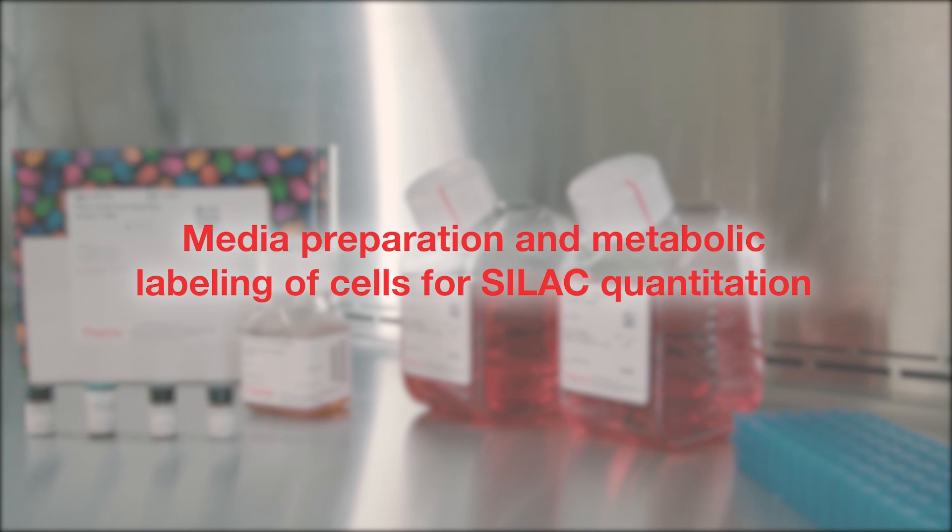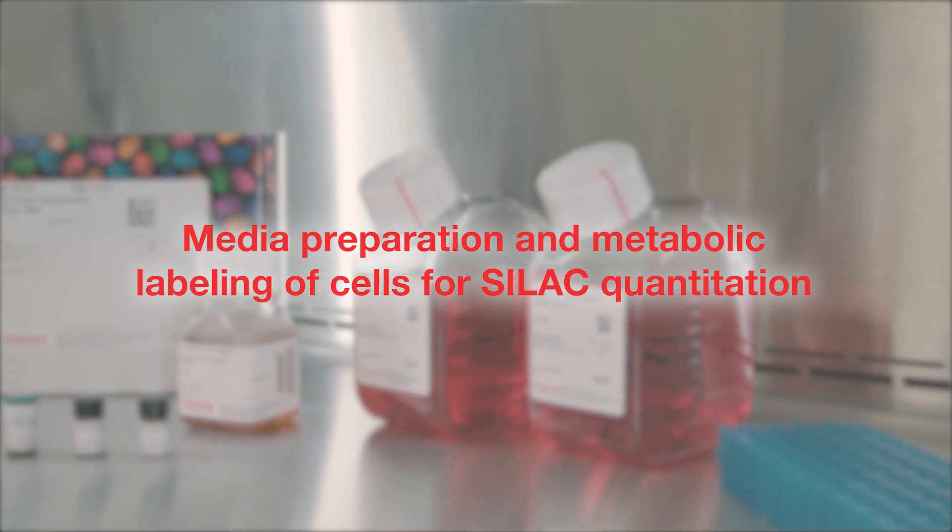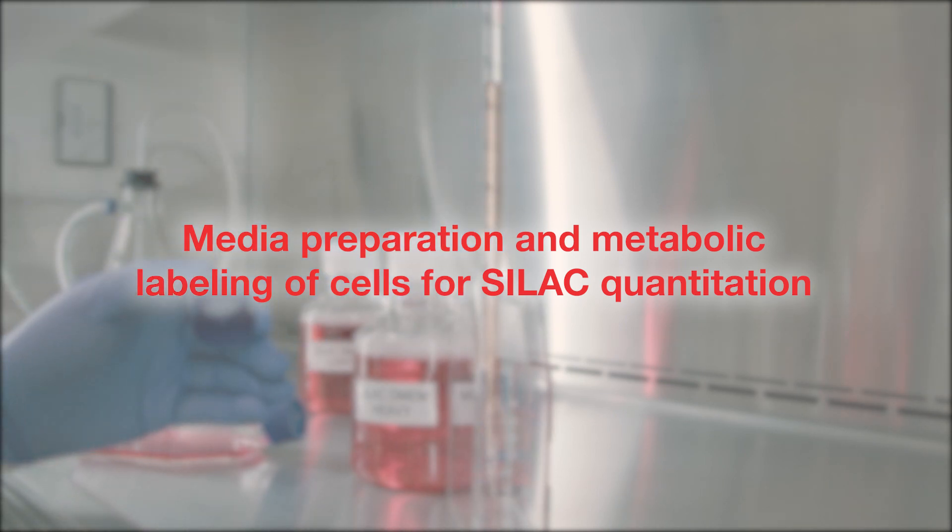Typical experiments involve growing two cell populations in cell culture media that are identical except that one contains the natural amino acid, referred to as light, and the other contains the isotope labeled amino acid, referred to as heavy.